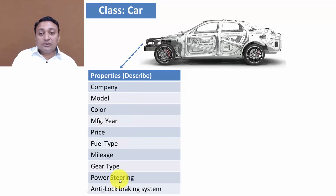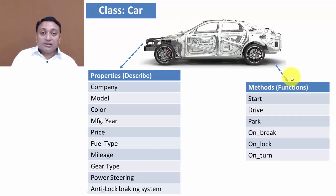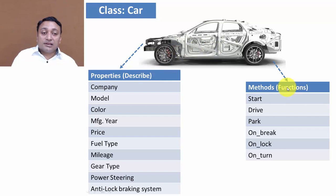These are properties that describe the car. Methods would be start, drive, park, and apply brake. So for each and every object there are some attributes — attributes describe the object — and methods are the functions that can be performed on that object.